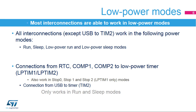Peripherals can be interconnected using the Interconnect Matrix even when the circuit is in a low-power mode. The low-power modes that can be used are run, sleep and low-power sleep modes, except for the USB to Timer 2 connection, which can only be used in run and sleep modes. The connections from the real-time clock or comparators to low-power timers can also be used in stop-0, stop-1 and stop-2 modes for low-power timer 1.